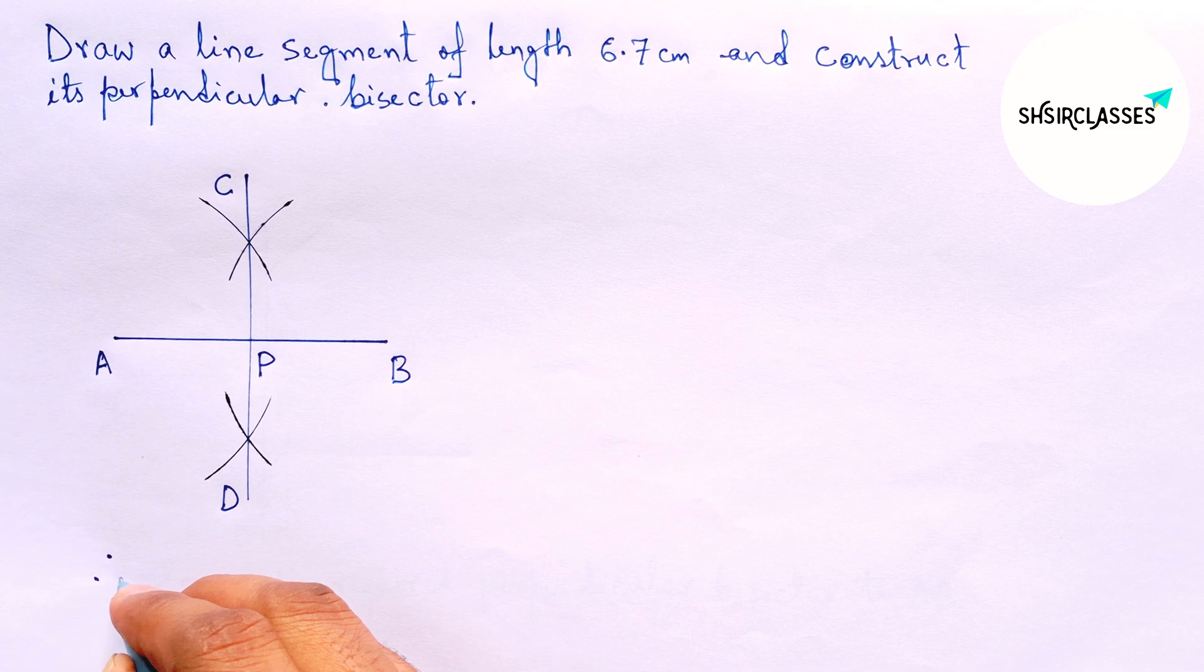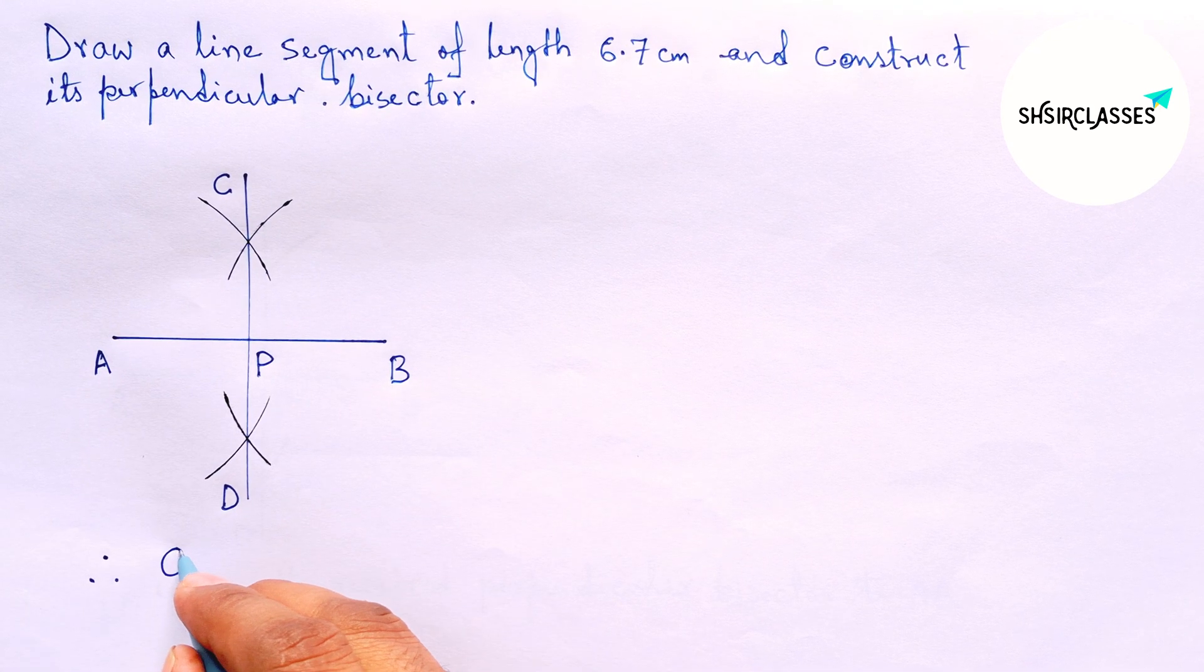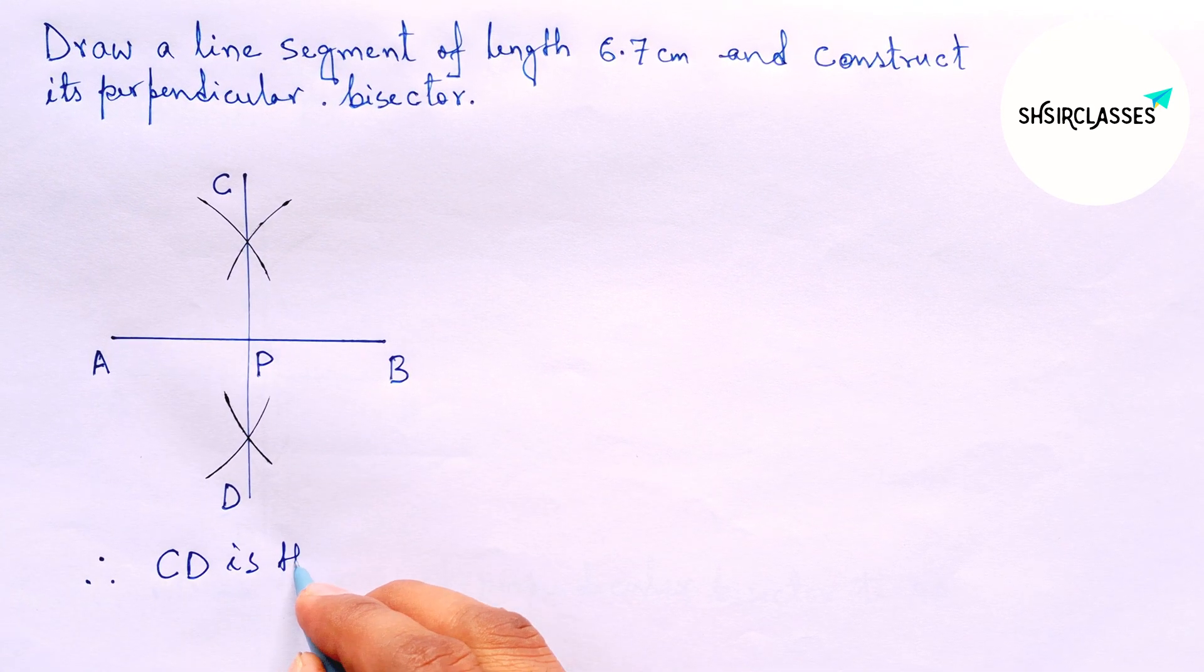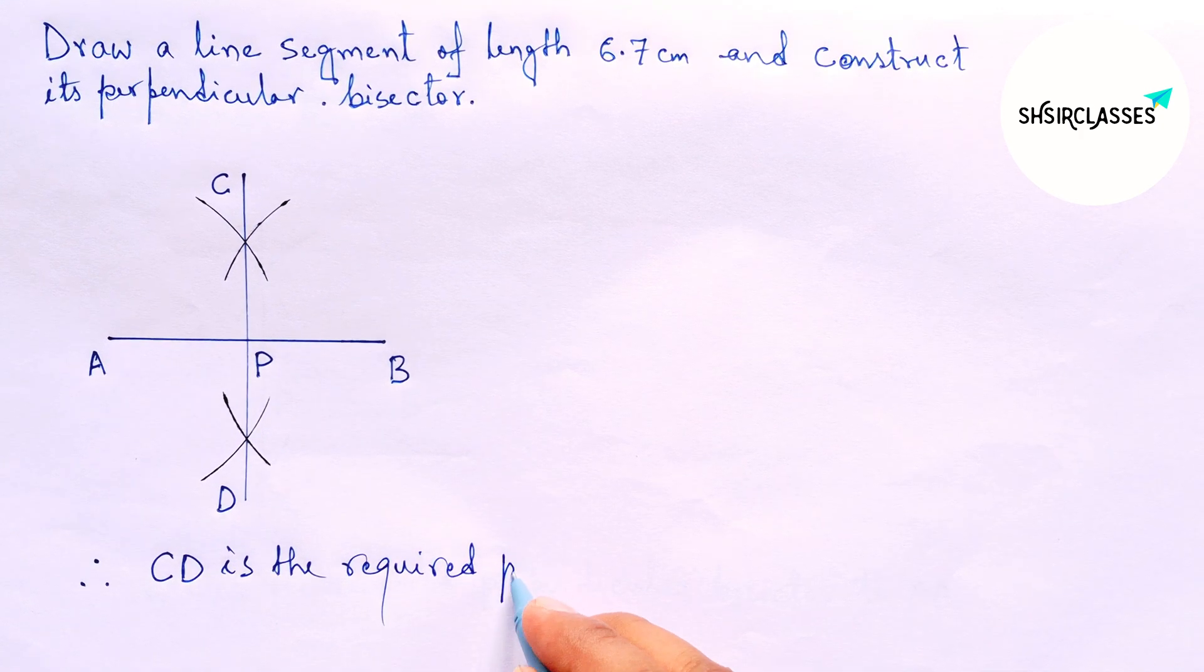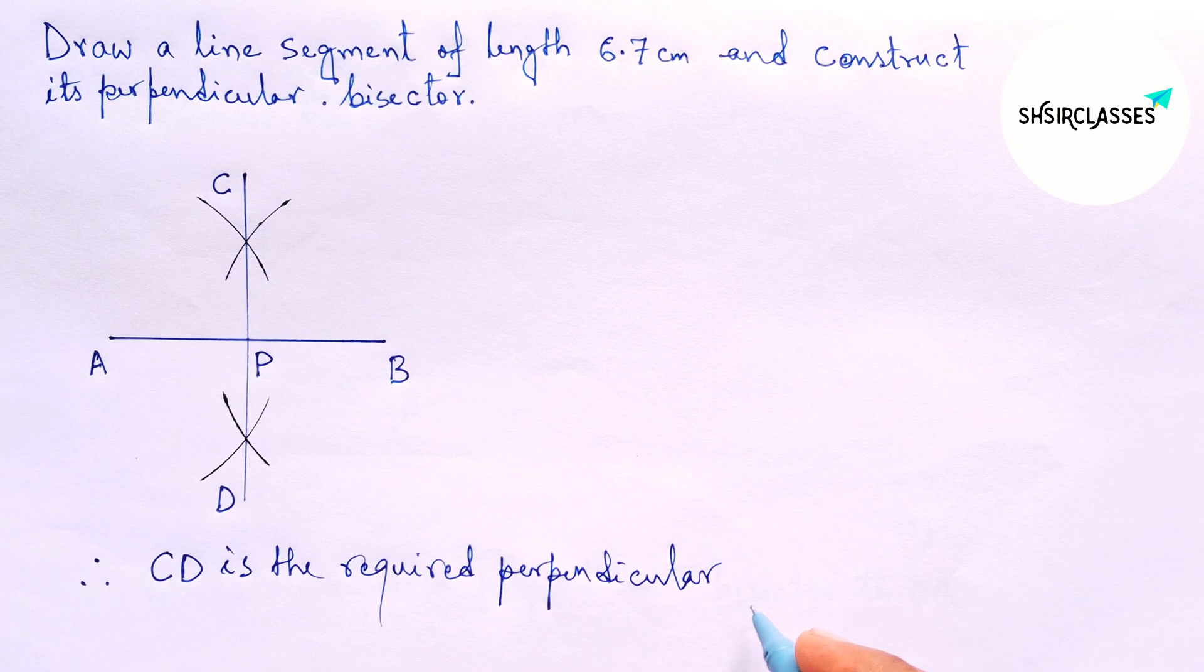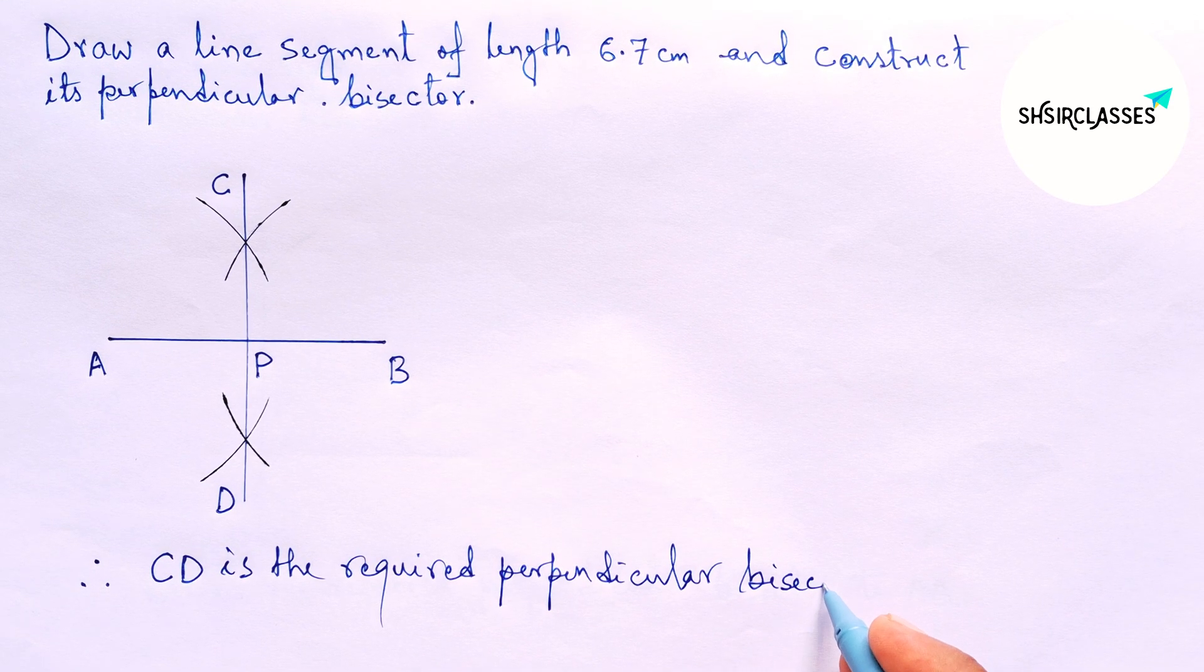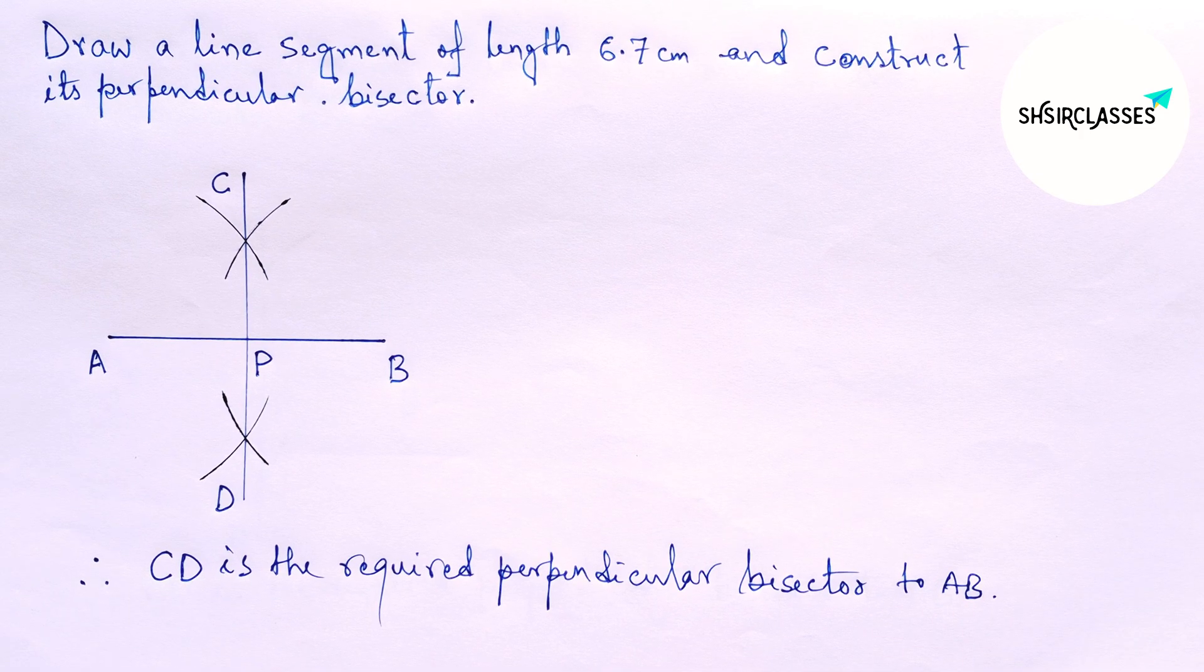Therefore, CD is the required perpendicular bisector to the given line AB equals 6.7 cm, and by this way you can construct a perpendicular bisector to a given line in an easy way.